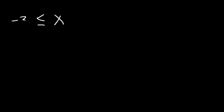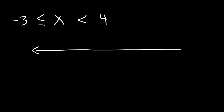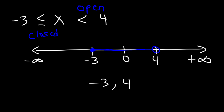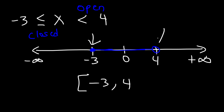Let's try another example: x is greater than or equal to negative 3, but less than 4. So negative 3 is to the left of 0, and 4 is to the right. We're going to have a closed circle at negative 3, but an open circle at 4. It's greater than negative 3, so we shade right; but less than 4, so we shade left — shading between the two. In interval notation, the answer is negative 3 comma 4. We start from the left and end on the right — closed circle gives a bracket on the left, and open circle gives parentheses on the right. So the answer is [-3, 4).